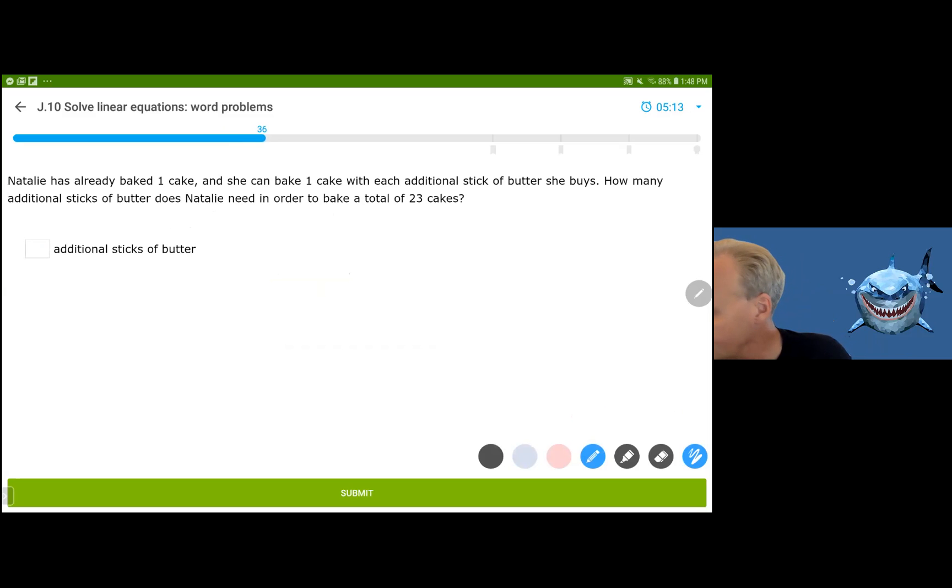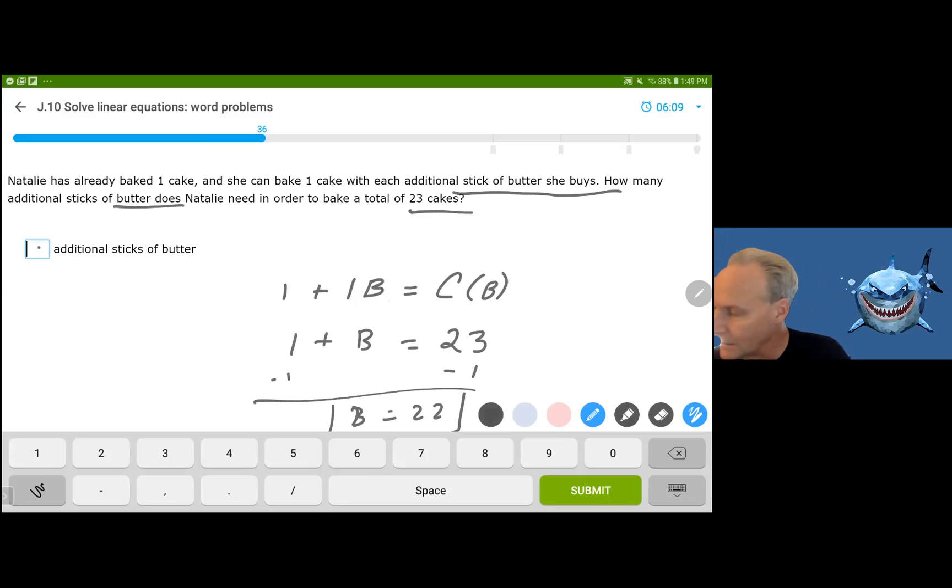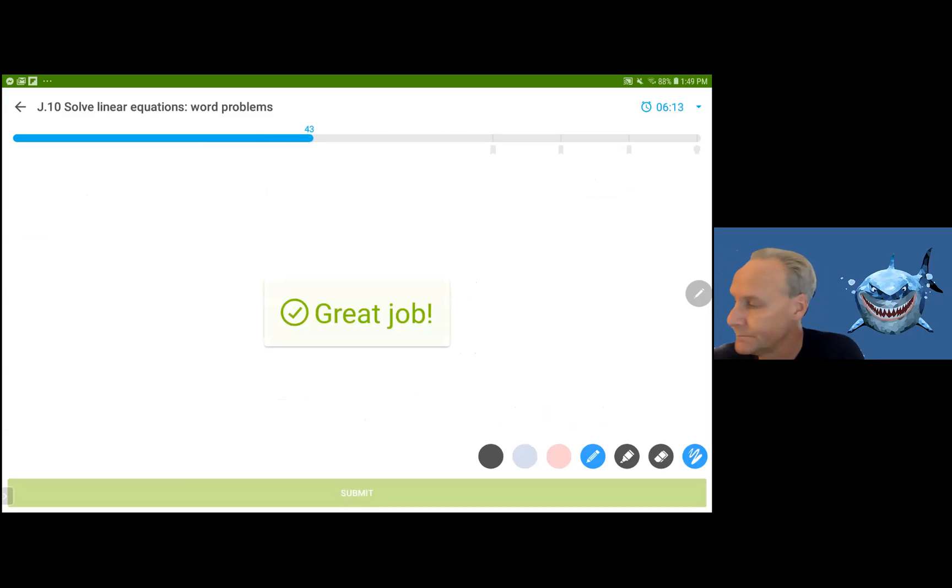Natalie already baked one cake and she can make one for each additional stick of butter that she buys. So she has one and she can make one more for each butter that she has. And this is the number of cakes based on how much butter she has. So again, I try to write functional notation that makes sense. This is the number of cakes that Natalie can get based on how much butter she has. She wants how much butter, how many additional sticks does she need to make 23 cakes. So what we're interested in is we want this to be 23 and we want to find the B that will make this true. And we subtract one from both sides. And of course, B is equal to 22 sticks of butter that she's going to need to make 23 cakes.